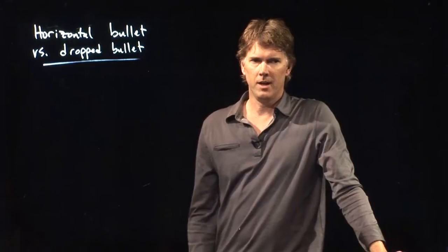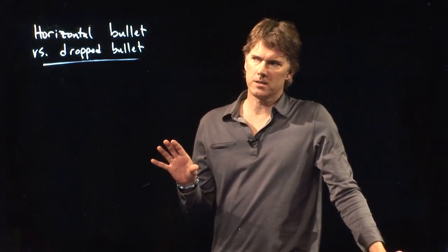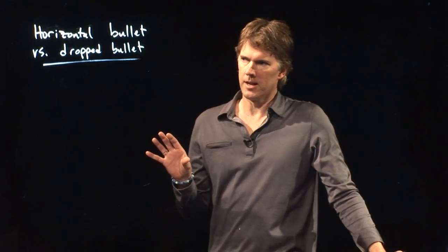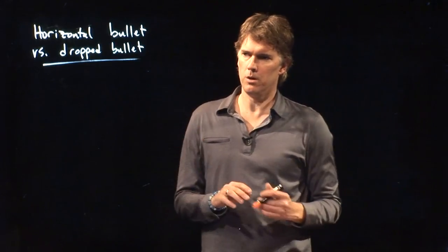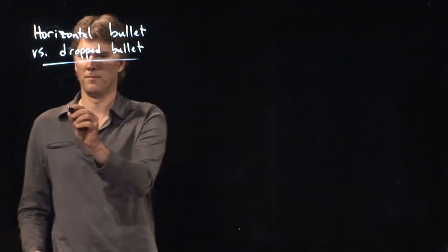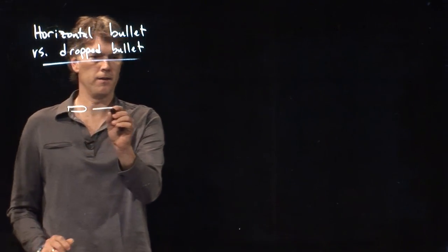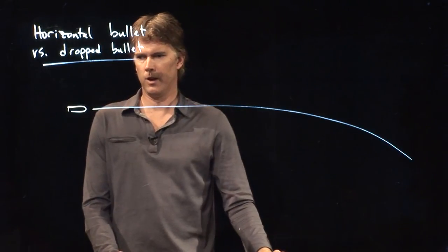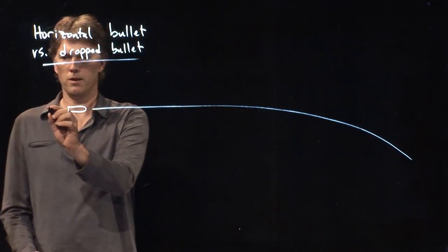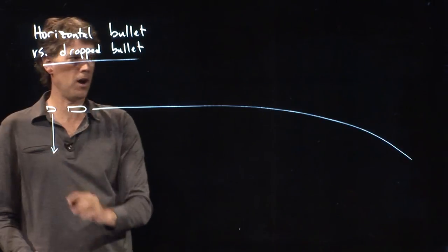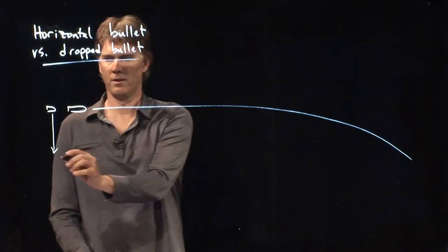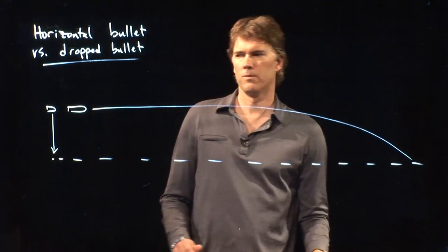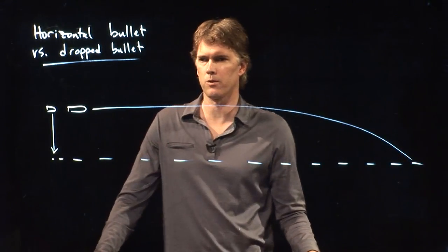Hello class, Professor Anderson here. Let's take a look at something that we talked about in class that is maybe a little disturbing, and it's this. If we shoot a bullet horizontally, very far away, it's going to eventually drop to the ground. What if I take that same bullet, and where I'm standing, I just drop it straight to the ground? Here's our ground level. Which one is going to hit the ground first?